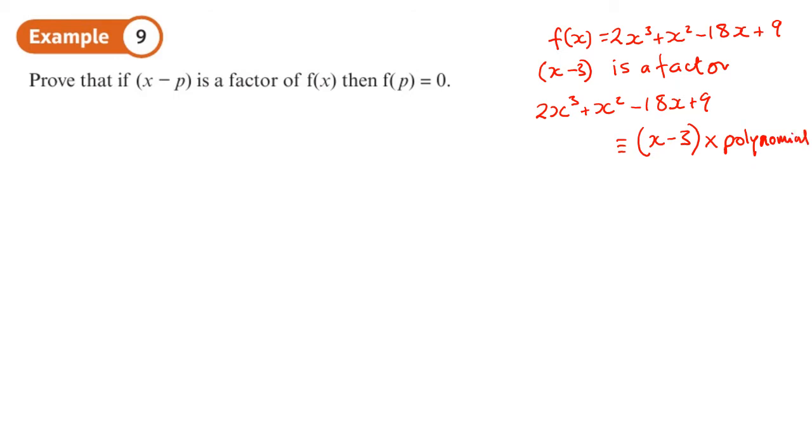That's basically what a factor means, that you can times x minus 3 by something else to give you the expression you started with. We're going to use that to help us. What does that mean? That means that this polynomial I've got can be written as x minus p, this factor, times by some other polynomial. This is the type of thing you'd get if you were doing long division and there was no remainder. That's basically what the g(x) is.